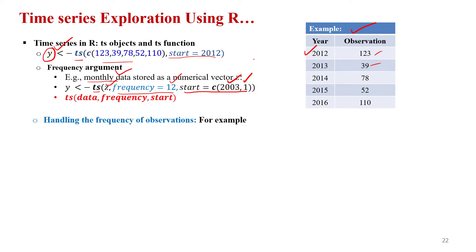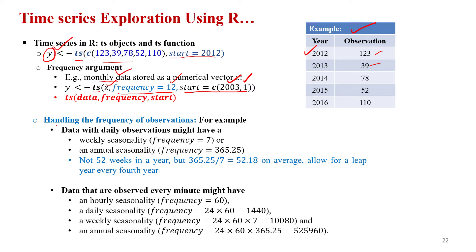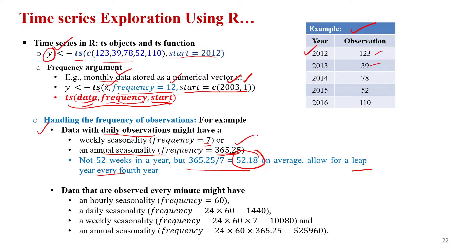In a time series, the most important things to mention are: first, the data — the variable containing the dataset; second, the frequency — whether it's yearly, monthly, weekly, or hourly data; and third, the starting point. For daily data, you can mention the frequency as 7 to identify weekly seasonality, or use 365.25 to cater for leap years. This value represents the number of weeks when considering those days.